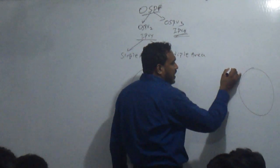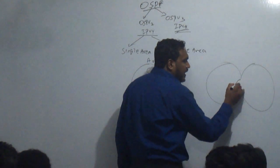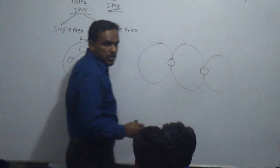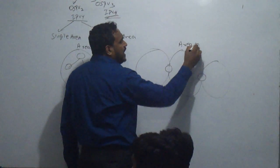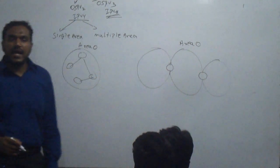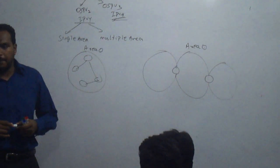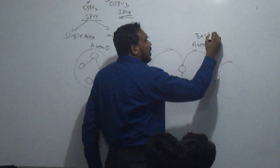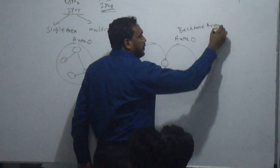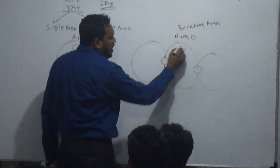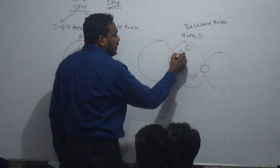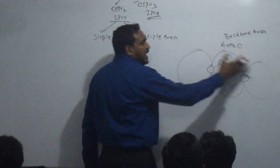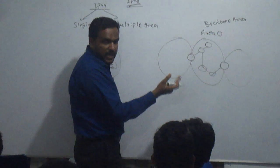In multiple area OSPF, you are connected with multiple areas, where area 0 is compulsory. We call area 0 the backbone area, where your routers are connected. All other areas must connect to area 0.